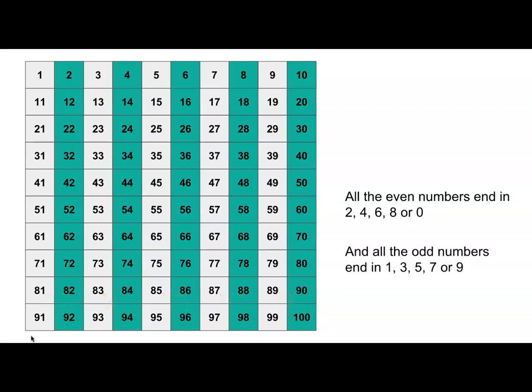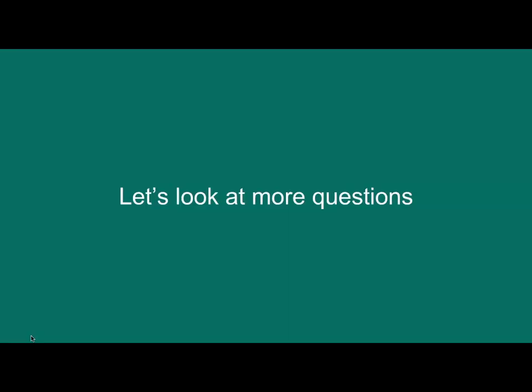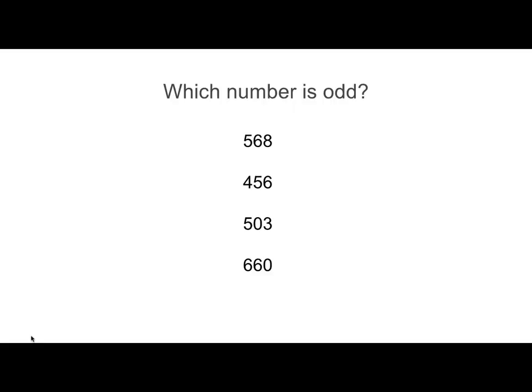So what about the number one thousand, four hundred and eighty two? Having a look at the ones digit, it's a two. So that number is even. Let's look at some more questions. Which number is odd? Looking at the ones digit, we have an eight, a six, a three and a zero. So the odd number is the one with the three — five hundred and three is odd.